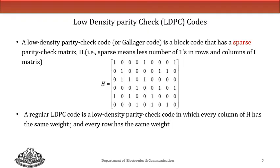Similarly, the column weight should also be the same. Looking at this H matrix, the first row consists of three ones, the second row again has three ones, the third row also has three, the fourth row also has three ones, and the fifth and sixth rows as well. So all six rows of this H matrix consist of three ones.